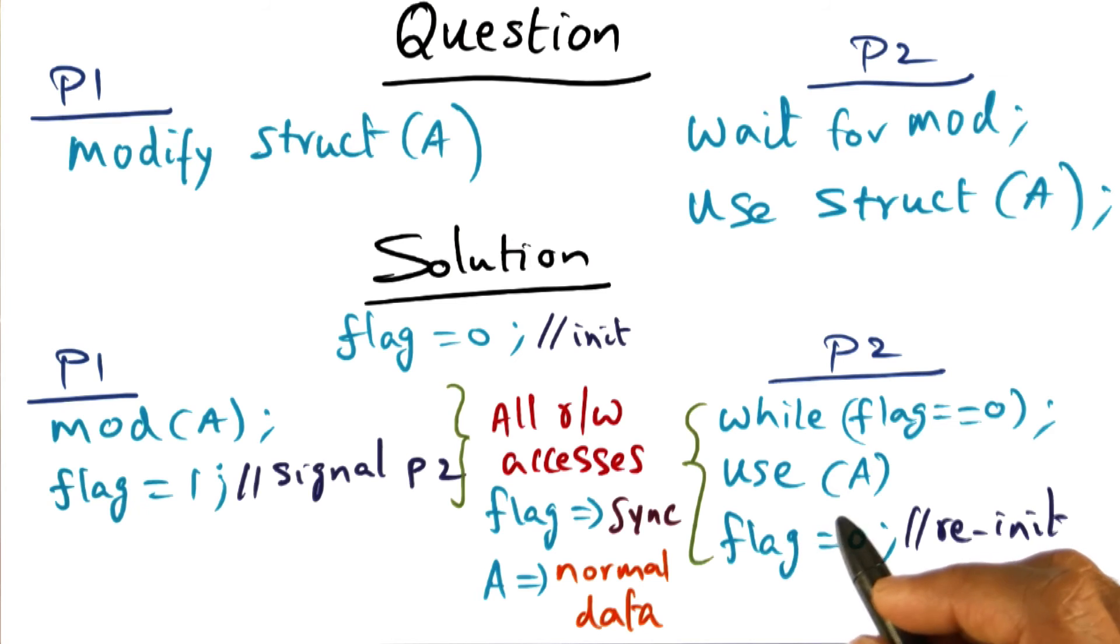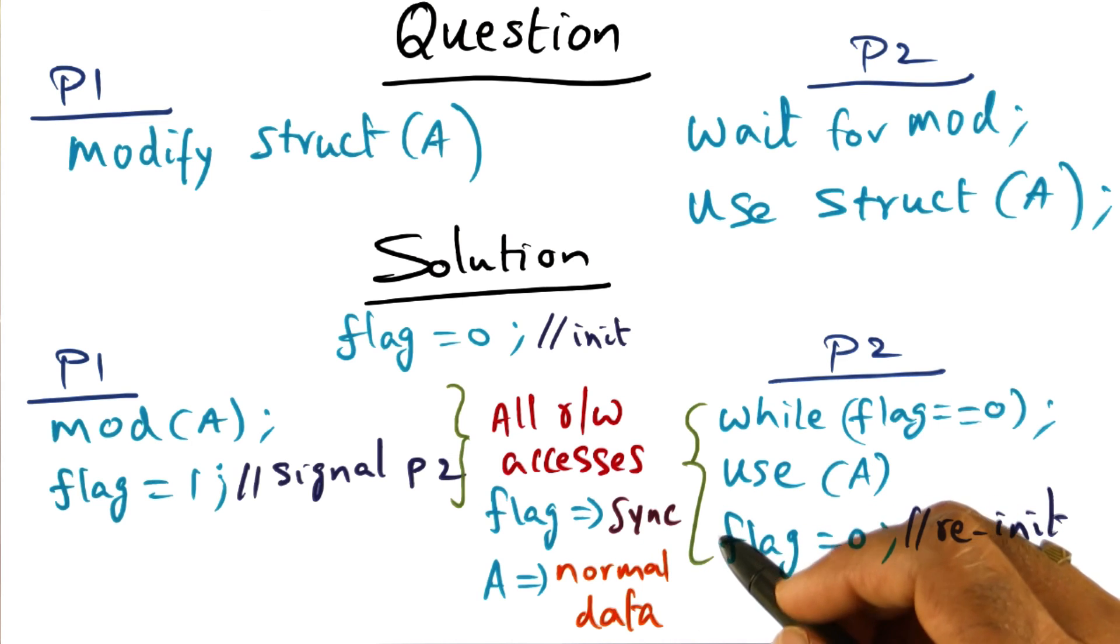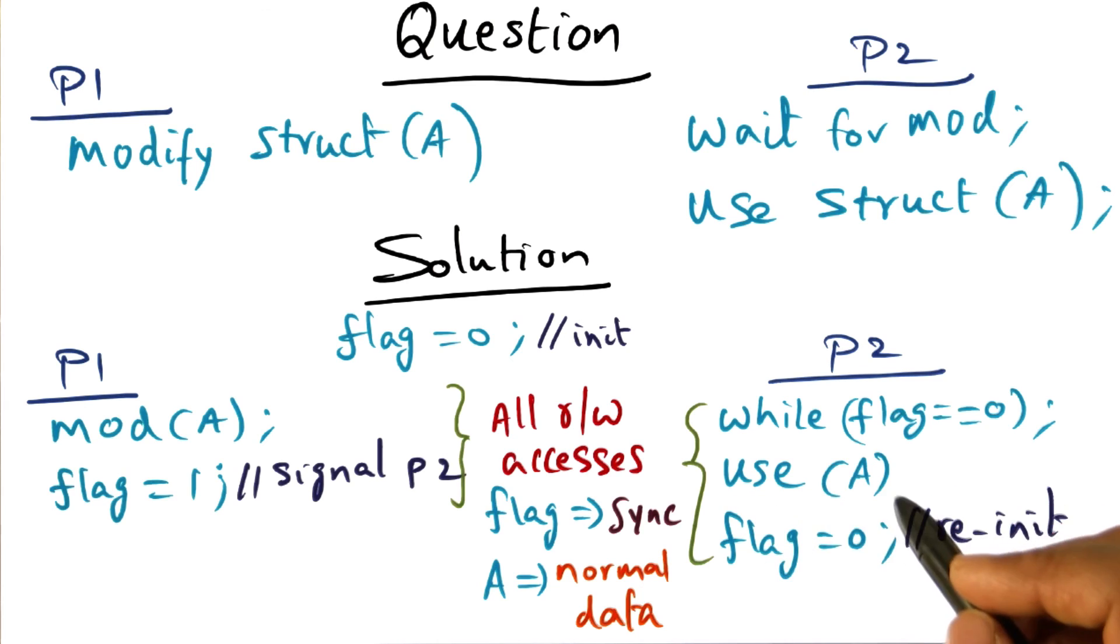But now, how about implementing a synchronization primitive like a mutual exclusion lock? Are atomic reads and writes sufficient to implement a synchronization primitive like a mutual exclusion lock? Let's investigate that.